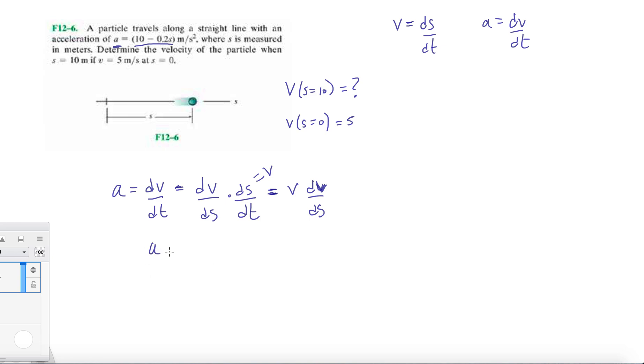So we have a, bring over the ds, ds equals v dv. So now we're going to have 10 minus 0.2s ds equals v dv. And now let's put up our limits here. So at s equals 0, we have our velocity equals 0. And at s equals 10, so let's just say, let's leave it as s, and then we'll just plug in, that way we can leave it as a variable and just plug in 10 afterwards. And this will be v.